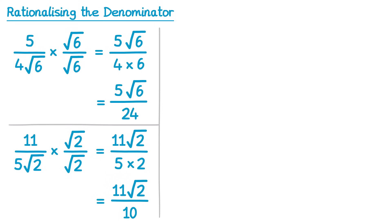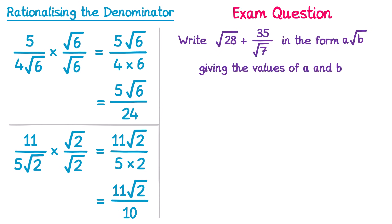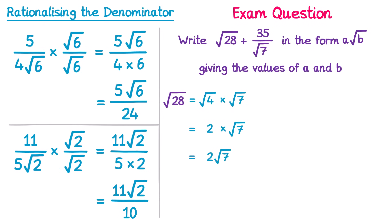Now that you've become familiar with how to rationalise the denominator, let's have a look at how it could be used in an exam question. So we've got the question: write root 28 plus 35 over root 7 in the form a root b, and we need to give the values of a and b once we've found them. At the moment we can't add these two things together because they don't have the same number inside the root, so we're going to need to do some simplifying first. Let's take square root 28 and rewrite that as root 4 times root 7. Root 4 is just 2, so it's 2 times root 7, which is 2 root 7. So that's the root 28 simplified, but what about 35 over square root 7?